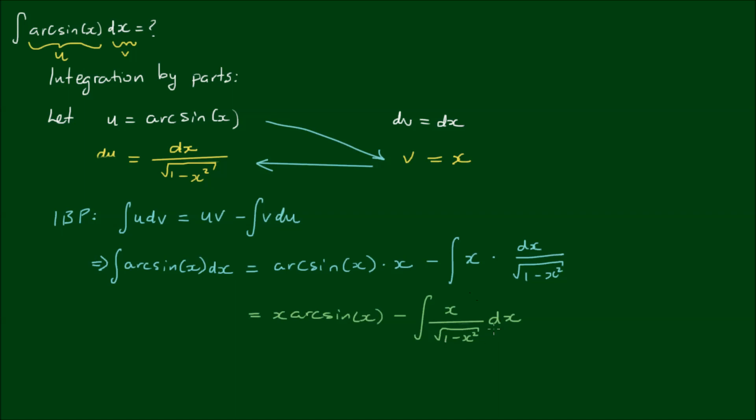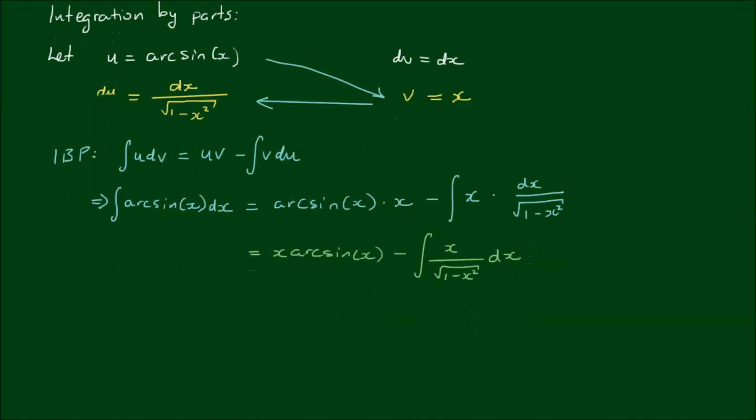So we have this second integral to deal with now. And it looks more complicated than it is because we can use a simple substitution for this one because the numerator here, x, is already related to the derivative of the x squared term here. So what I'm going to do is let g equal to 1 minus x squared. And taking the derivative of g with respect to x, we have negative 2x. So I'm going to rearrange this to be negative 1 half dg equals x by dx.